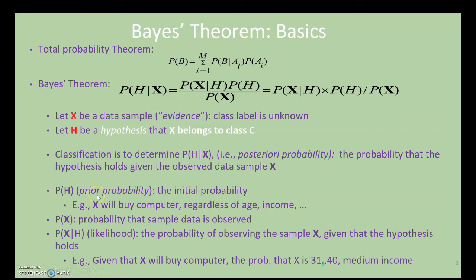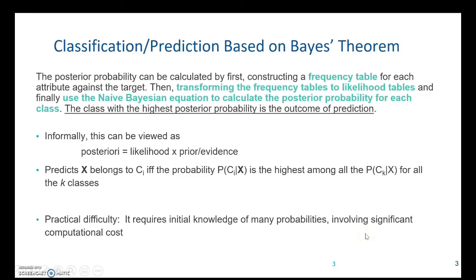P(H) is the prior probability or the initial probability that X will buy the values depending on the attributes, and P(X) is the probability that the sample will be observed. P(X|H) is the likelihood or the probability of observing the sample X given that the hypothesis holds.